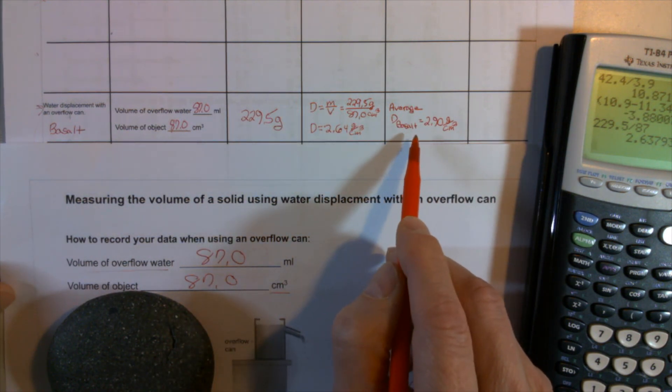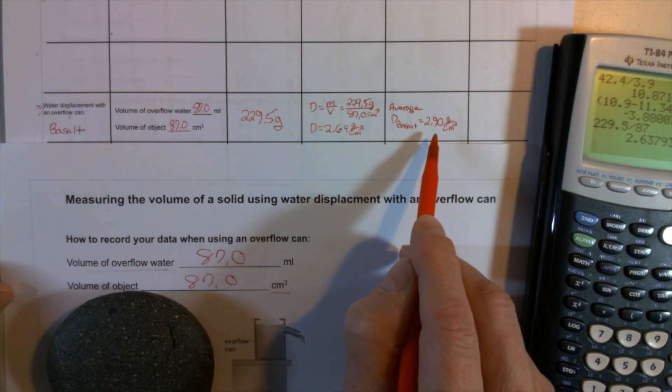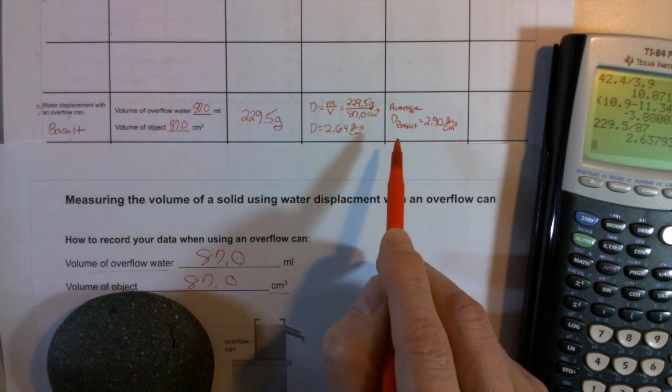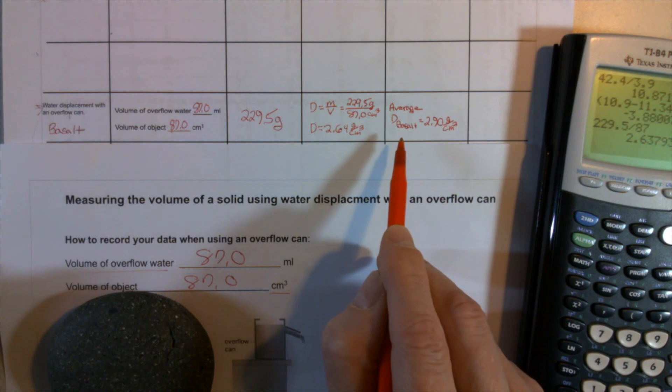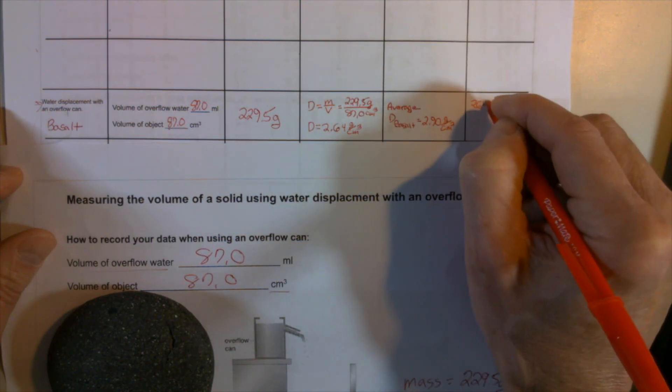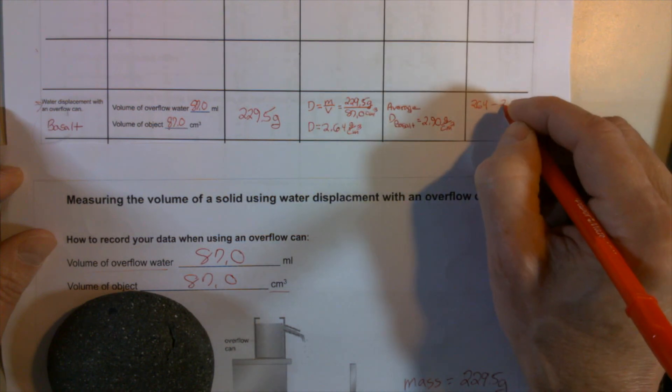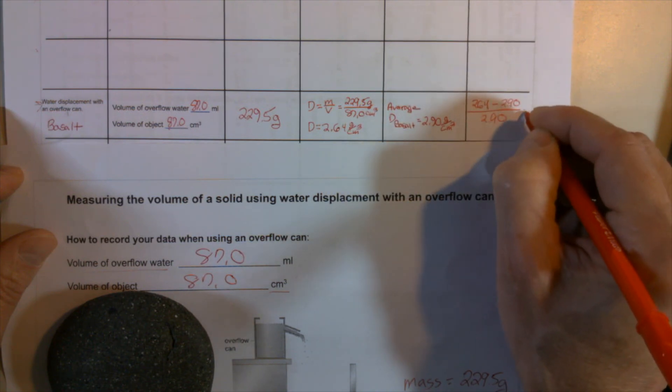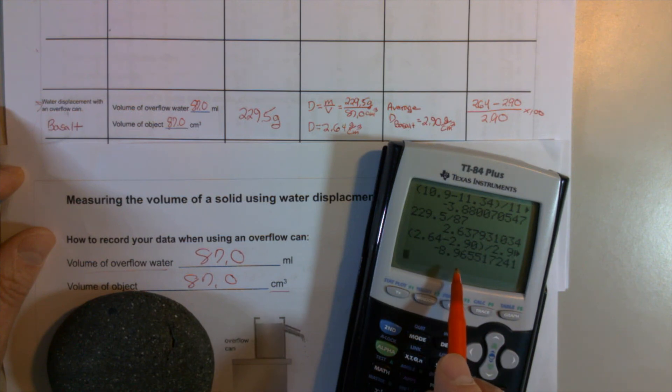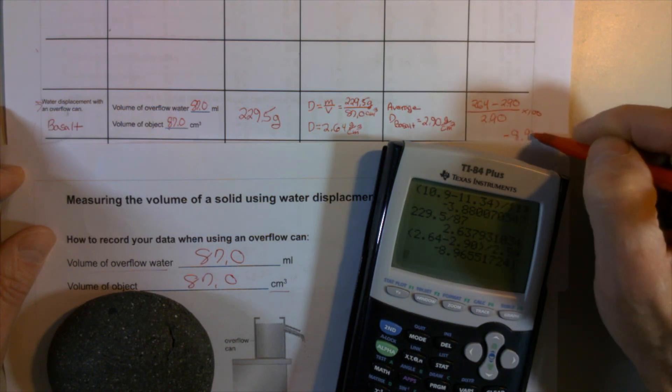Now, I looked up in Wikipedia the density of basalt. And what I found was an average value, because basalt can vary in composition. So really, the fact that mine is a different number from that doesn't really tell me a whole lot, except that it's pretty close. But let's do a percent difference anyways. So, as before, we'll take the measured value, which we have as 2.64, subtract from it that accepted value of 2.90 divided by 2.90 times 100. And then we'll do the calculation. Again, remember, the top has to go in parentheses. Negative 8.97 percent.